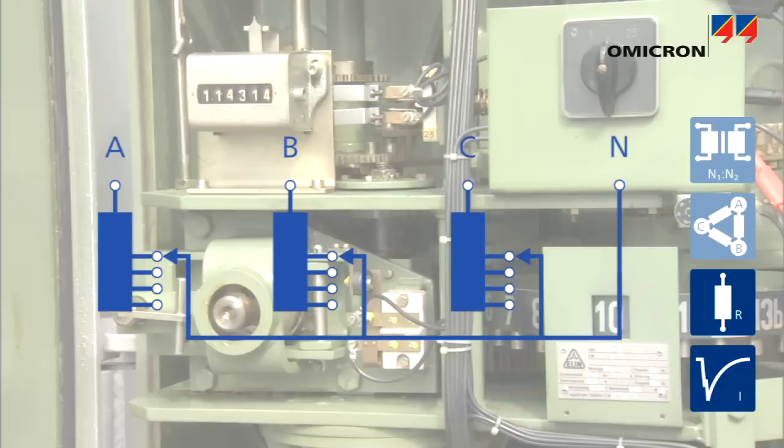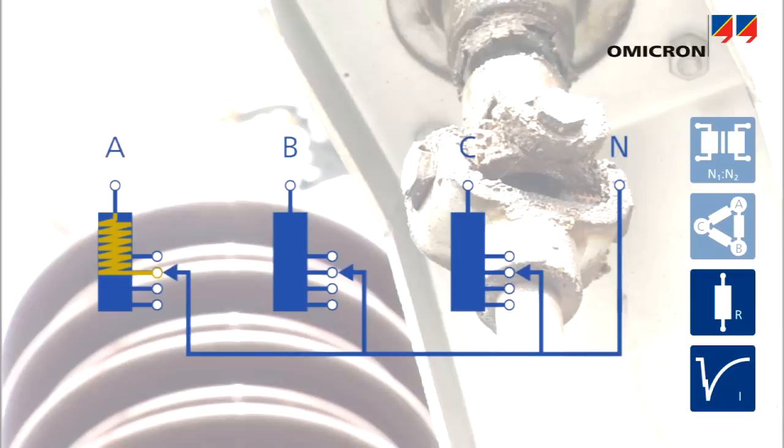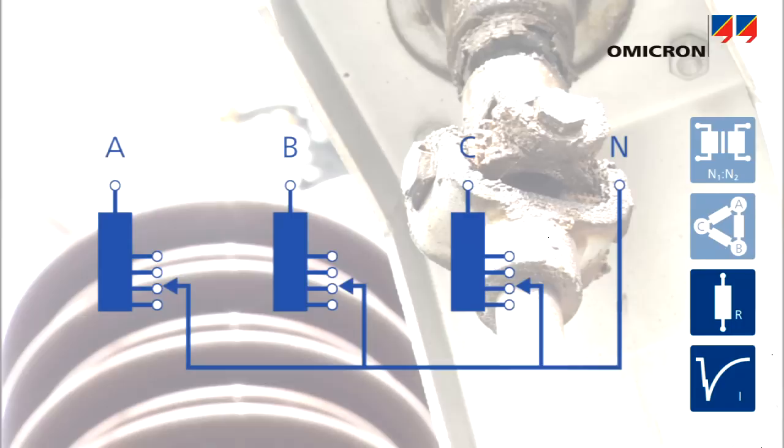In each tap position, the CPC measures the resistance value. Then, the tap changer is operated in order to perform the measurement in the next tap position. This process is repeated until all measurements on one transformer phase are finished.